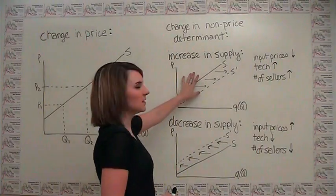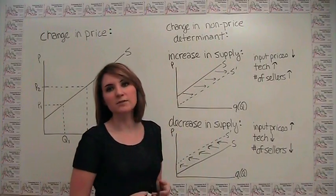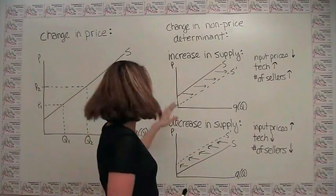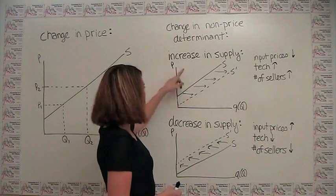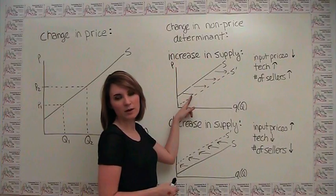You can also think of these as changes in the required price to achieve a given level of output. When we have an increase in supply, it takes a lower price than it did before to maintain a particular quantity of output.